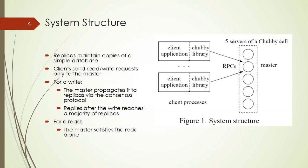This is the system architecture displayed in this figure. The replicas maintain a copy of a simple database; clients can send a read or write request only to the master. For a write request, the master propagates it to the replicas via the consensus protocol, and replies after the write reaches a majority of replicas. For a read operation, the master satisfies the read alone. Once a new replica has processed the request that the current master is waiting to commit, that replica is permitted to vote in the election for a new master.